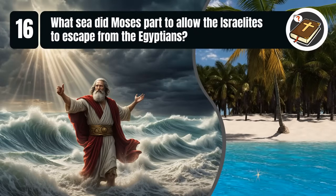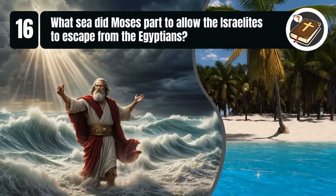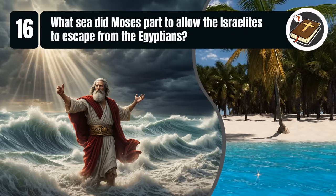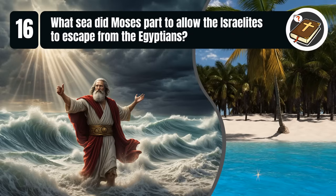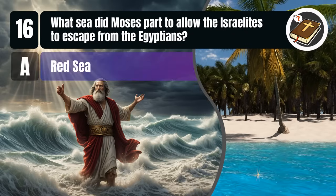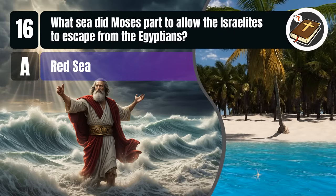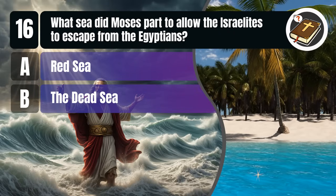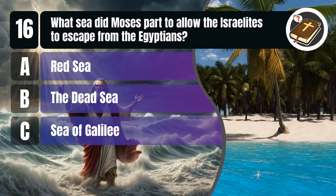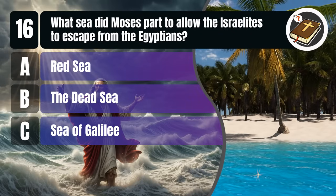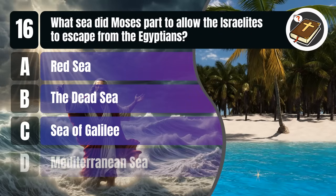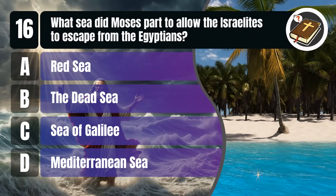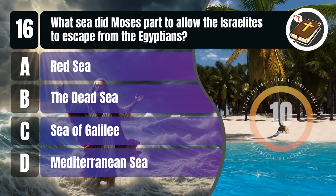Question 16. What sea did Moses part to allow the Israelites to escape from the Egyptians? A. Red Sea, B. The Dead Sea, C. Sea of Galilee, D. Mediterranean Sea. You get 10 seconds.